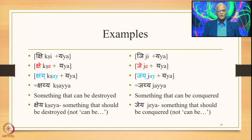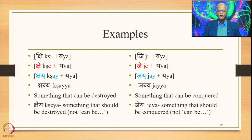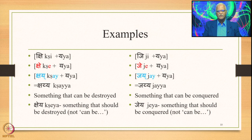So Kshaya is a form generated in the sense of Shakya — something that can be destroyed. Kshay is another form that can be generated but that will mean something that should be destroyed, not something that can be destroyed. There is a shade of difference of meaning between these two words.